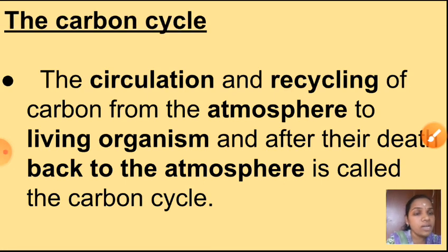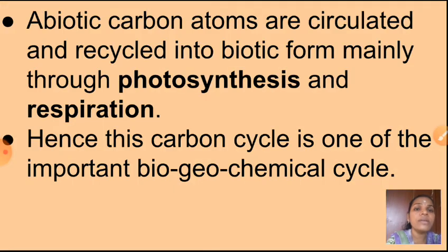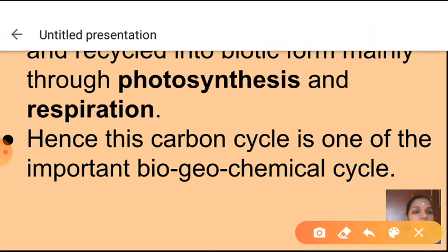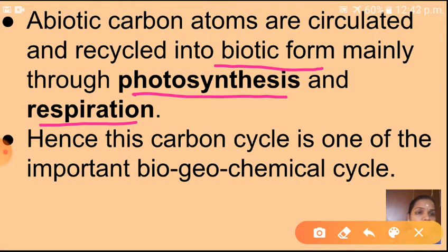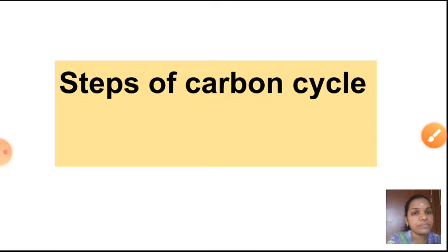The circulation and recycling of carbon from the atmosphere to living organisms, and after the death of living organisms back to the atmosphere — this cyclical manner is why we call it the carbon cycle. Abiotic carbon atoms are circulated and recycled into biotic form mainly through photosynthesis and respiration. This makes the carbon cycle one of the most important biogeochemical cycles.